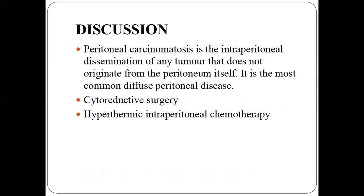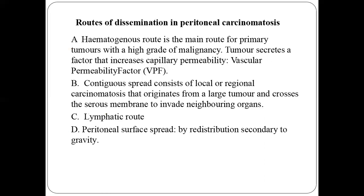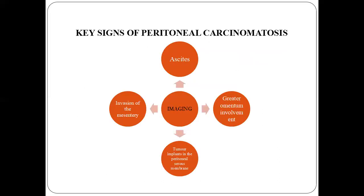Peritoneal carcinomatosis is an intraperitoneal dissemination of any tumor that does not arise from the peritoneum itself. Earlier it was thought to be fatal and of poor prognosis, but treatment options have changed management. Routes of dissemination in peritoneal carcinomatosis include hematogenous, contiguous, lymphatic, and peritoneal surface spread by redistribution via gravity.